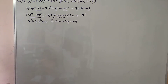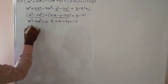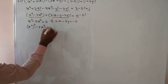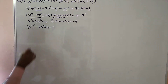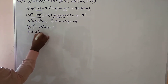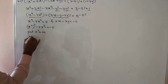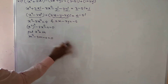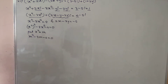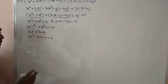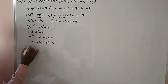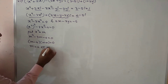Now let us solve these two equations to find the values of x and y. The first equation x⁴ - 3x² - 4 = 0 can be written as (x²)² - 3x² - 4 = 0. Putting x² = m, this becomes the quadratic m² - 3m - 4 = 0.